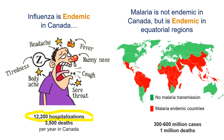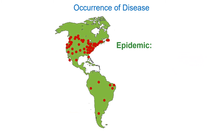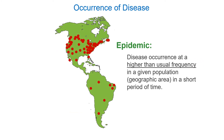Malaria is not endemic in Canada — it's not normally transmitted here. We do have malaria cases in Canada, but they are all connected to people who have traveled to tropical locations where malaria is endemic. The levels there sometimes go up or down due to things like extra rain, which leads to more mosquitoes.